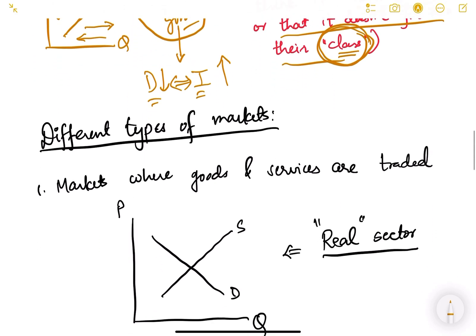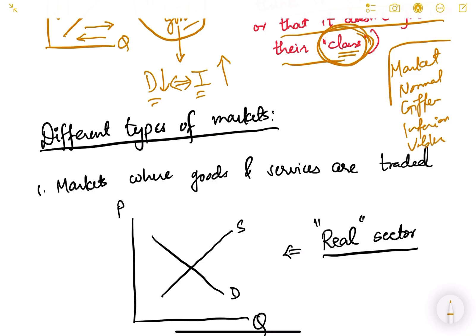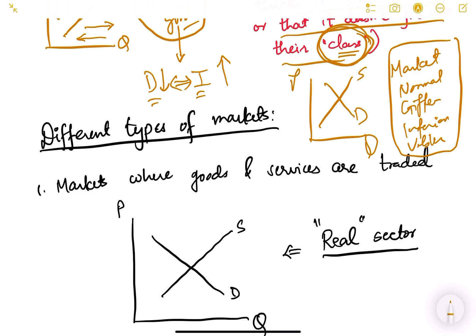So we have now understood the meaning of market, and the different types of goods: normal goods, Giffen goods, inferior goods, and Veblen goods. To recap: the supply curve is upward sloping and the demand curve for normal goods is downward sloping. Price is on the y-axis, quantity on the x-axis, and wherever the two curves intersect is the equilibrium point — giving us equilibrium price and equilibrium quantity.